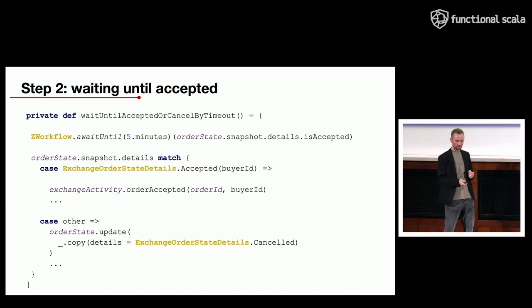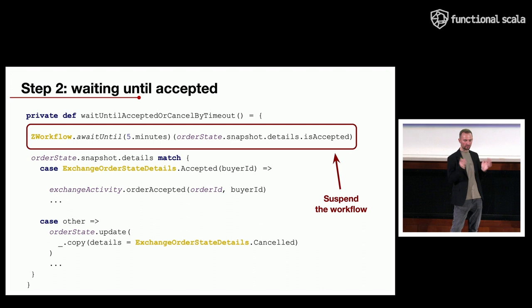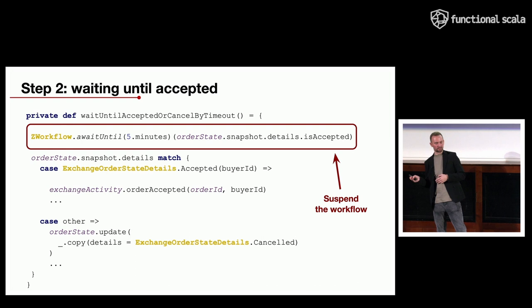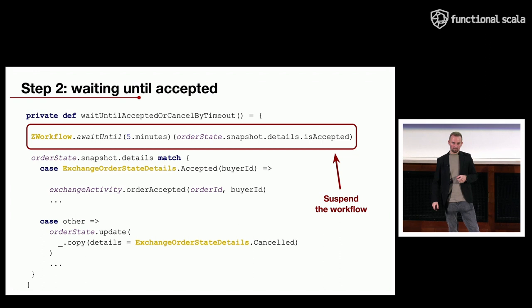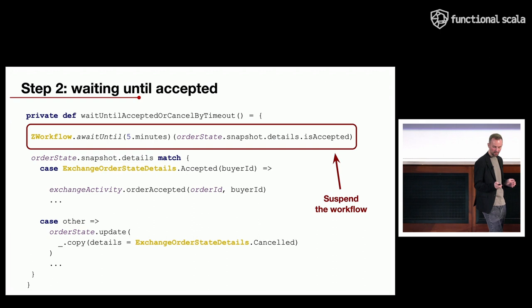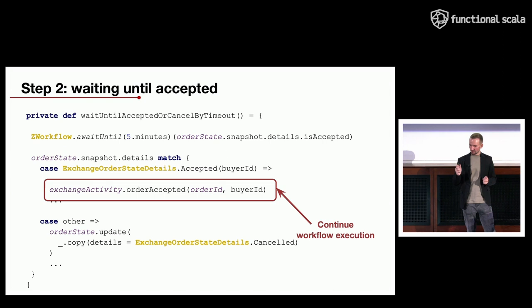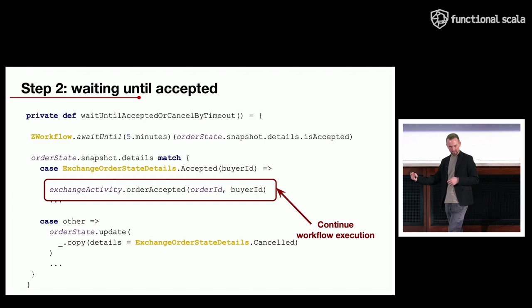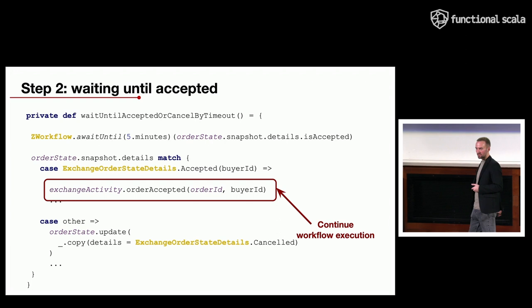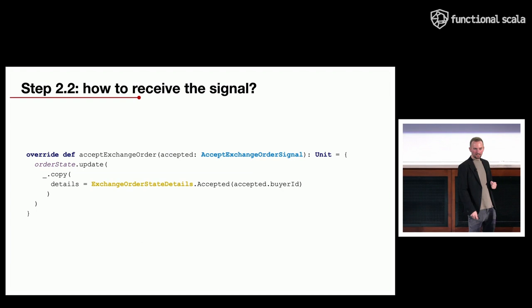Our business process requires waiting for another customer to accept the order. Using the await-until method, we completely suspend the workflow execution for a given timeout or until a certain condition is met — in this case, until the workflow state becomes 'accepted.' After the timeout exceeds or the condition is met, we handle the current workflow state: if it becomes accepted we invoke the second activity notifying Alice that Bob accepted her exchange, and continue normally; otherwise we mark the business process as cancelled and finish.